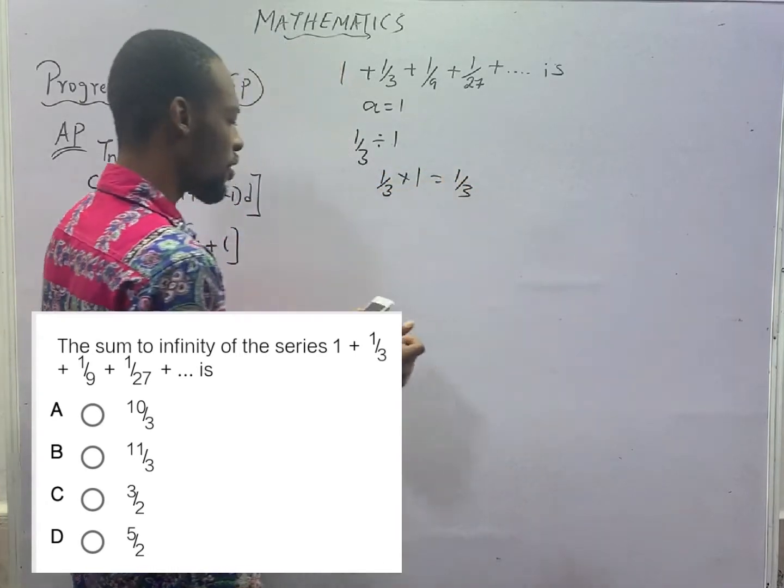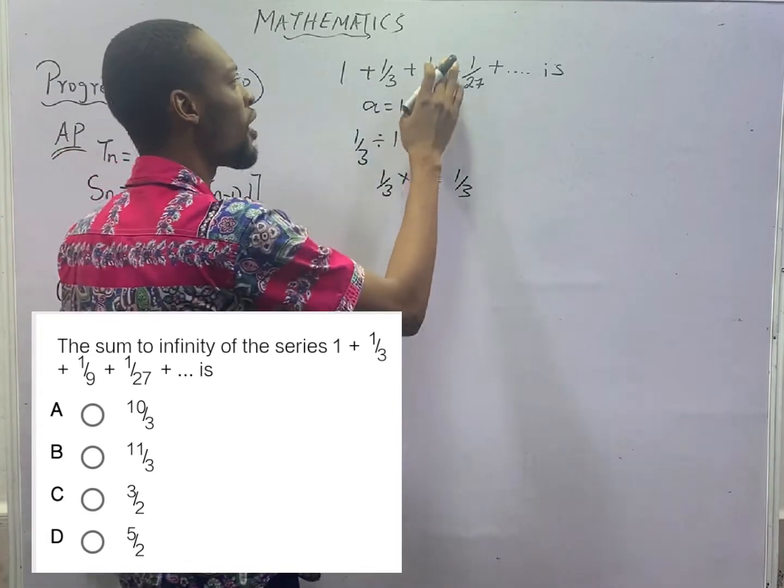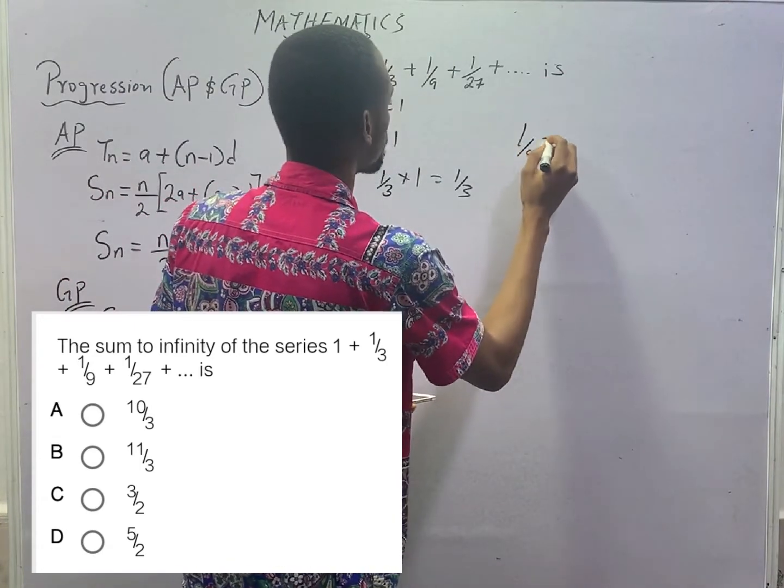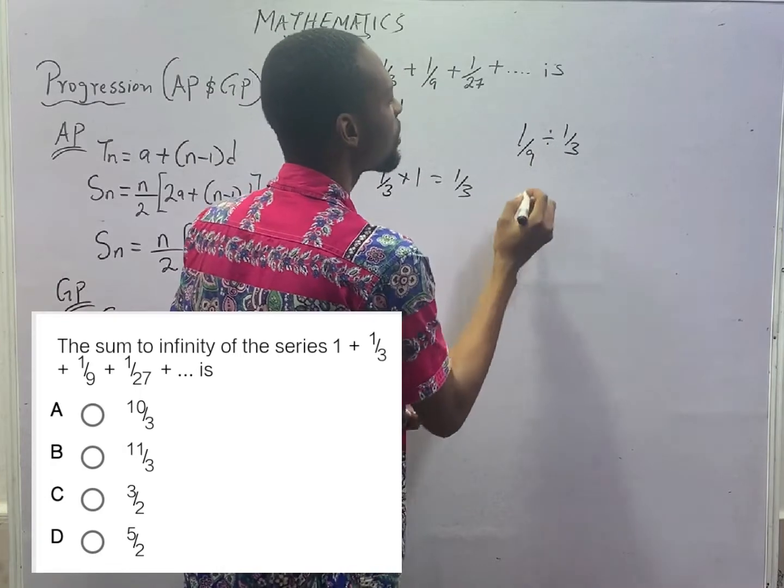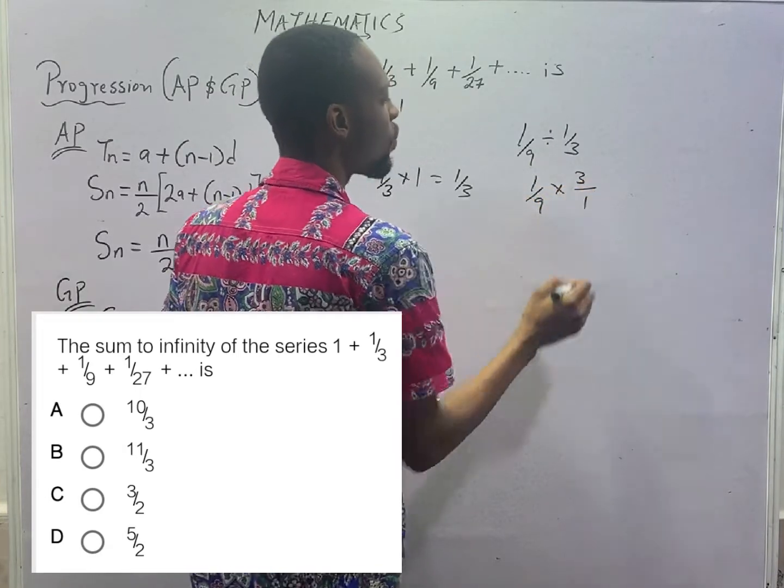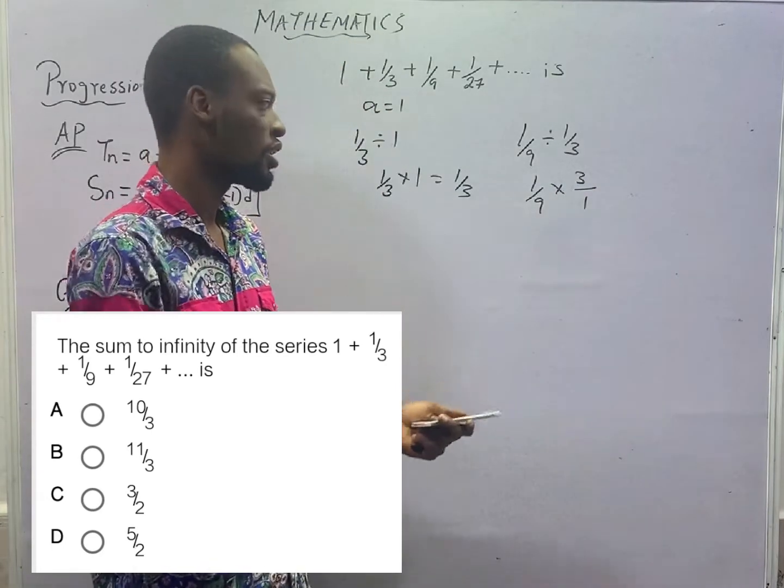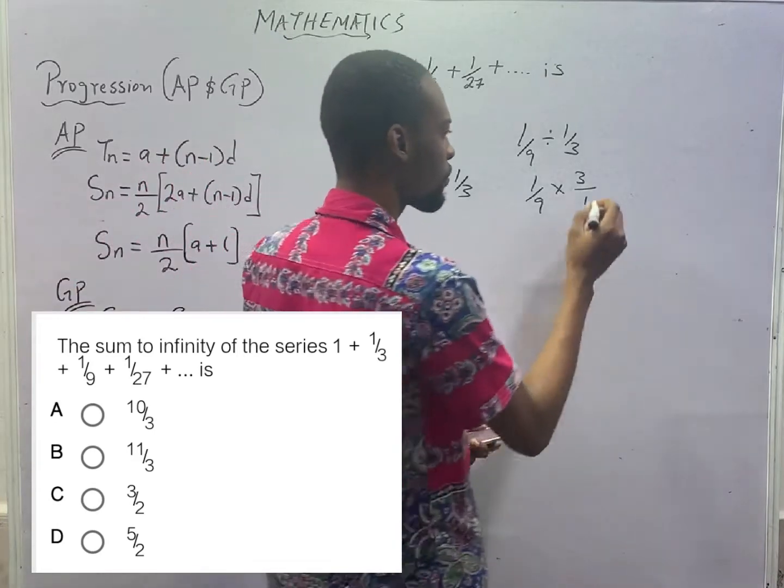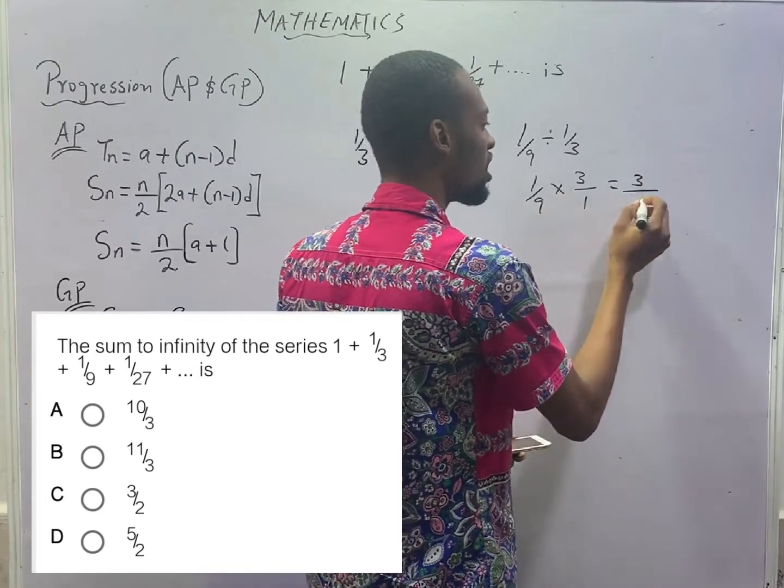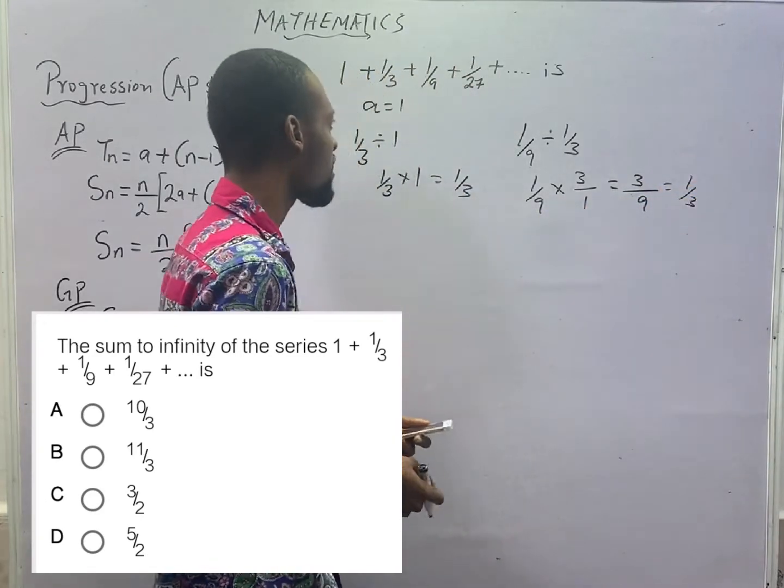Anyhow you look at it, the common ratio is 1/3. If you also say 1/9 divided by 1/3, this will be the same as 1/9 times 3/1. This gives you 3/9, which is still 1/3. So that is the common ratio.